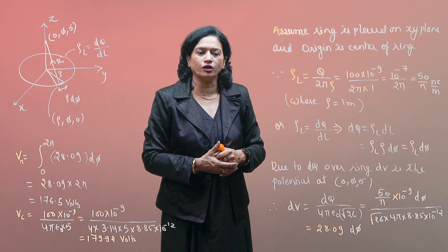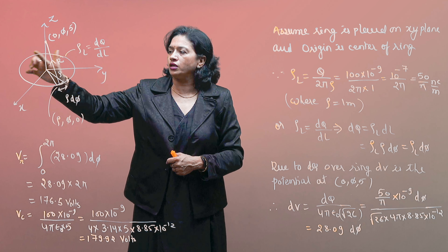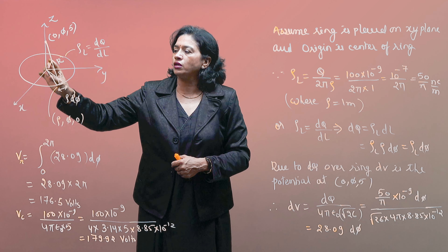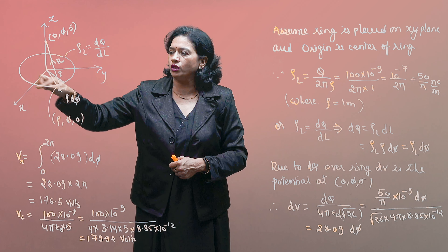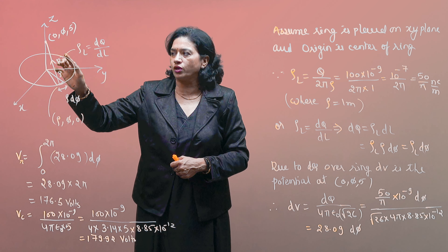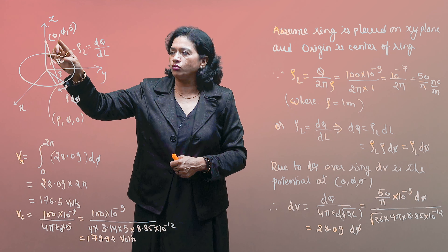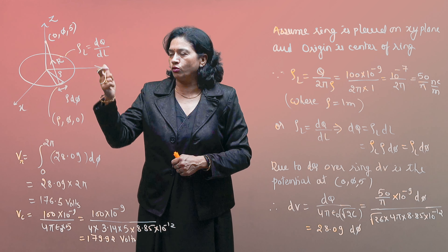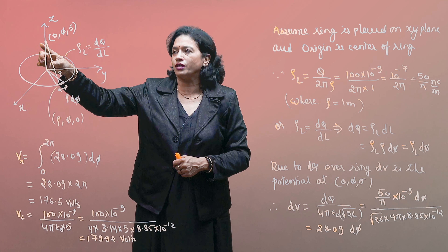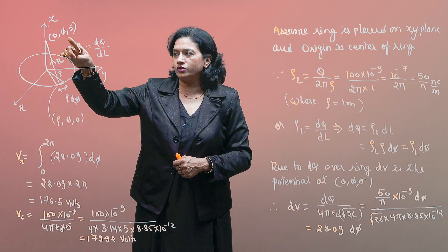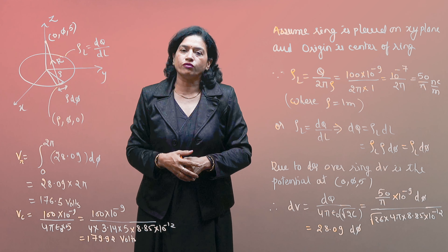The radius ρ has value 1 meter as given in the question. The point P is located on the z-axis, so ρ = 0 at the point, meaning it lies on the z-axis with φ varying around the ring.